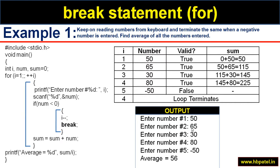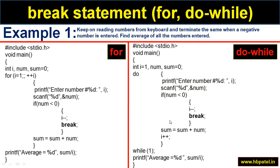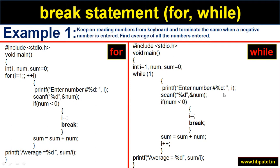With i starting at 1 and no loop condition (always true), each number is read into num. If num is less than 0 — a negative number — do i-- and then break. This exits the loop. The sum of valid numbers is divided by i (which is the count of valid numbers). For example, 50+65+30+80=225, and with i=4, 225 divided by 4 gives 56 as integer output.